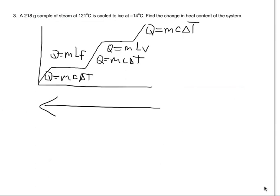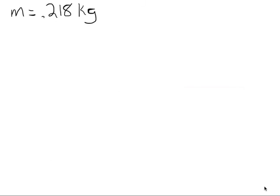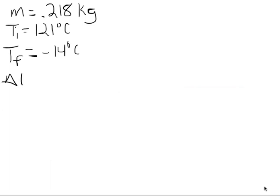Let's break this up into our individual steps and write out our variables. The mass is 0.218 kilograms. The initial temperature is 121 degrees Celsius. The final temperature is negative 14 degrees Celsius. We're looking for the change in energy, which is q.